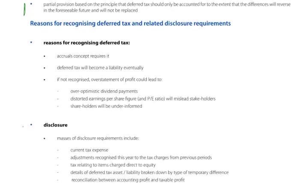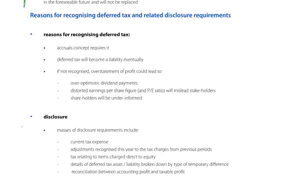A possible five-marker could ask for the reasons for recognizing deferred tax and the related disclosure requirements. The reasons for recognizing deferred tax are: the accruals concept requires it; it will become a liability eventually; and if it's not recognized, an overstatement of profit could lead to over-optimistic distributions, distorted earnings per share, and therefore be misleading to stakeholders and potential investors, leaving shareholders under-informed.